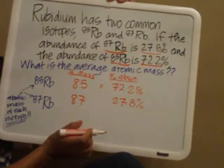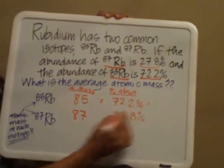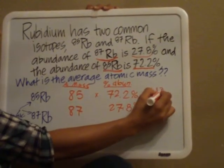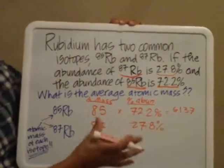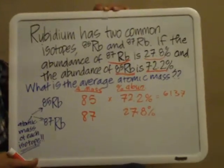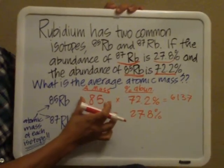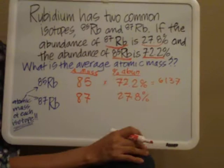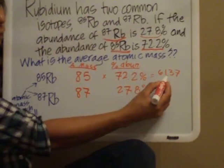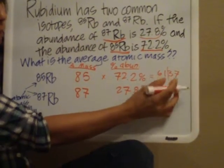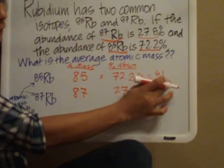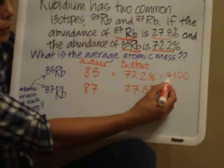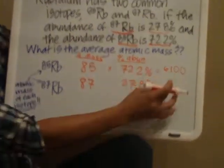So 85 times 72.2, you're going to multiply those two numbers. And out of the calculator, you're going to get 6,137. Now the important thing to remember is that you have to take significant figures into account. So if you look at the atomic mass, it's 85. So there's two significant figures. Your answer can then only have two significant figures. So you count the first two, draw the line, everything else then is going to turn into zeros. So 6,137 turns into 6,100 with two significant figures.